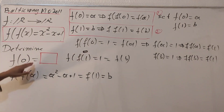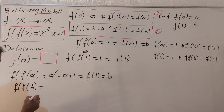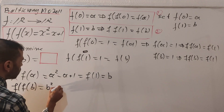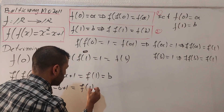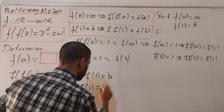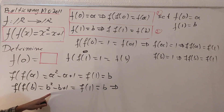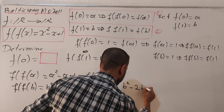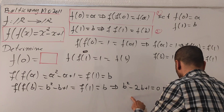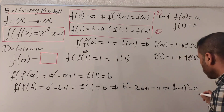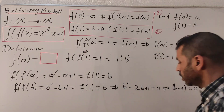Now plugging x with b: f of f of b equals b squared minus b plus one. We also know f of f of b equals f of one equals b. So b squared minus b plus one equals b, which gives b squared minus two b plus one equals zero. This is a perfect square: b minus one squared equals zero, so b equals one.